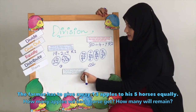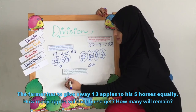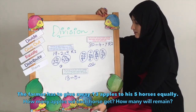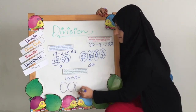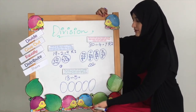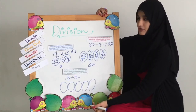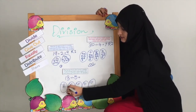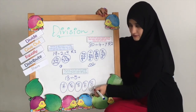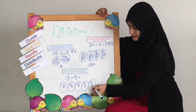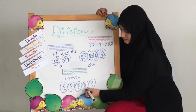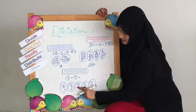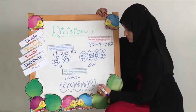The farmer has to give away 13 apples to his 5 horses. So we have 13 apples and we have 5 horses. How many apples will each horse get? How many will remain? So we are going to draw the 5 horses and now we are going to distribute the 13 apples, making sure we are distributing them equally. 1, 2, 3, 4, 5. Everyone gets 1. 6, 7, 8, 9, 10. Everyone gets the 2nd apple. Now we are already at 10. 11, 12, 13. These 2 don't have the 3rd apple, so we cannot give the first 3 horses the 3rd apple and we need to erase that. So these 3 apples are going to be the remainder.